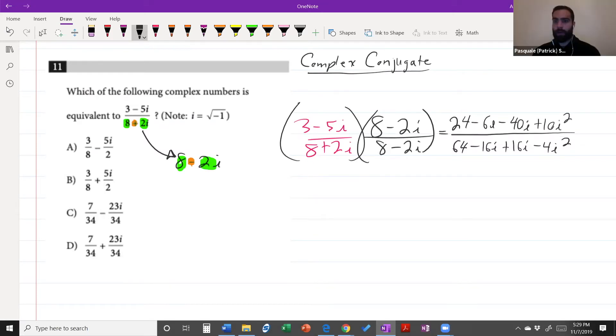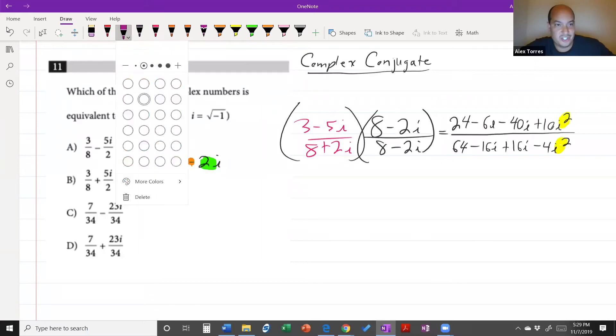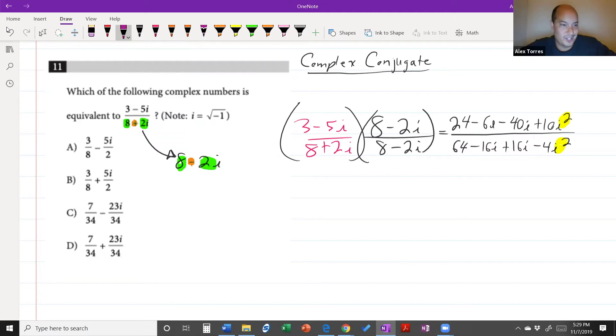Now we can plug in our negative 1 wherever we have an i squared. I was just talking about this right before this session. We can get really complicated with the imaginary number i, or we could just treat i like an x, like we've been doing so far, but also just know that i squared is negative 1 and i to the fourth is positive 1.